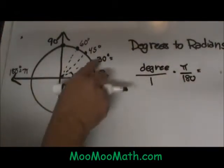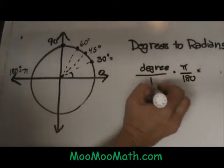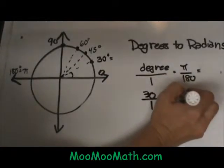Let's look at an example. Here is a 30 degree angle. We are going to switch that to a radian. I am going to take 30 over one times pi over 180.